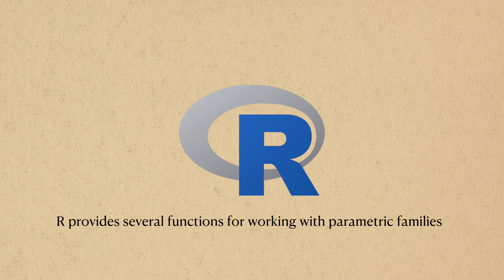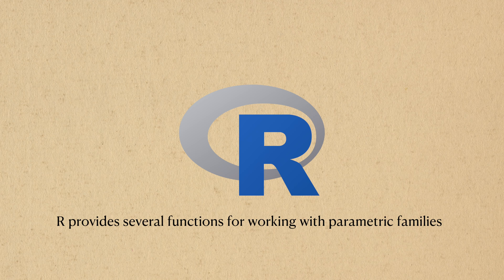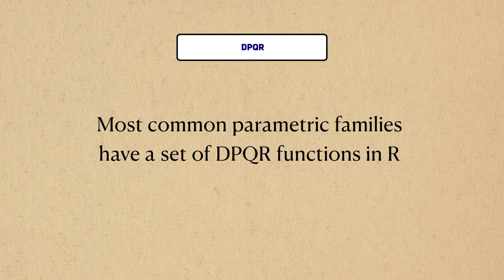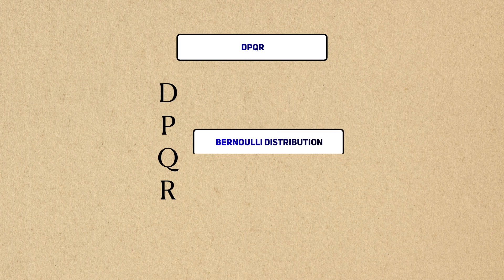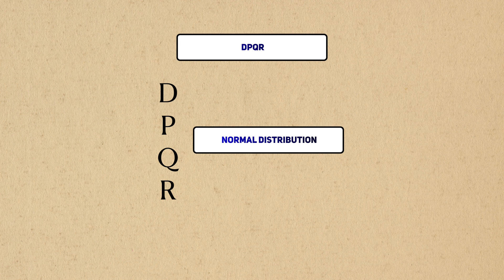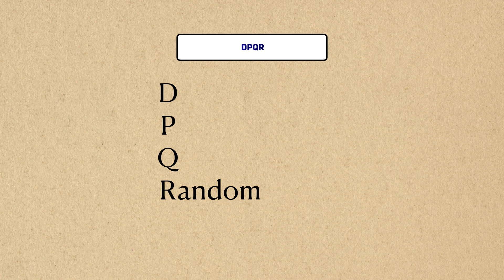R provides several functions for working with parametric families. This isn't a technical term, but I'll call these functions the dpqr functions. Most parametric families have a set of dpqr functions, so if you understand how to use them with one family, you know how they work with others. For our code example, we use the normal distribution.